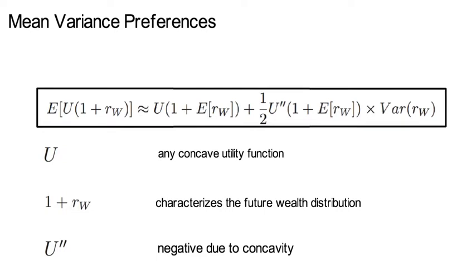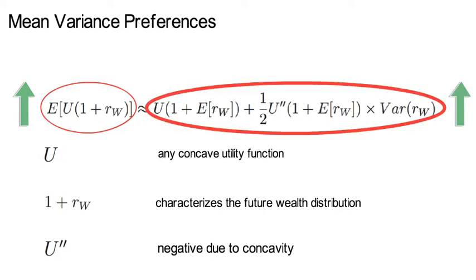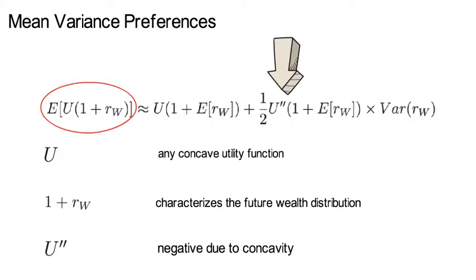Markowitz and Levy basically showed that an investment strategy that maximizes an investor's expected utility is approximately the same strategy that maximizes the return that the investor receives on average for a given level of variance. Now, the right-hand side of that last expression represents what is called mean variance preferences.